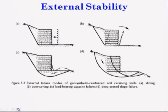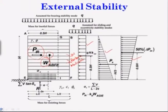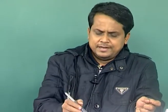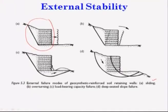The external failure modes of geosynthetic reinforced soil retaining walls: the first one is sliding. It is possible that the entire soil mass along with all the reinforcing material may slide from its original position to a new position.